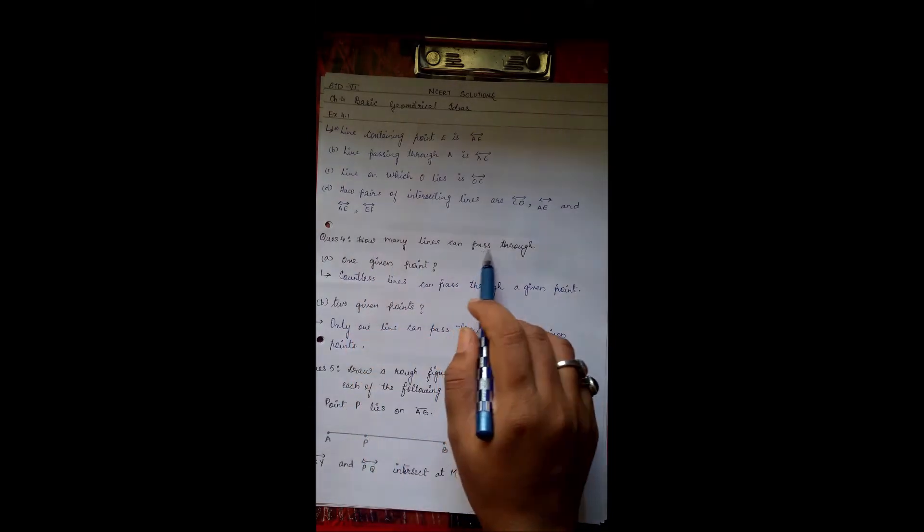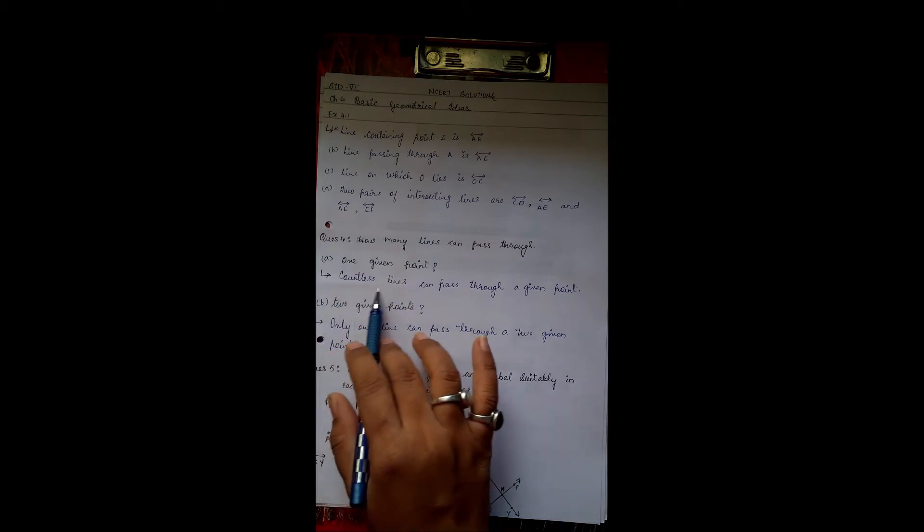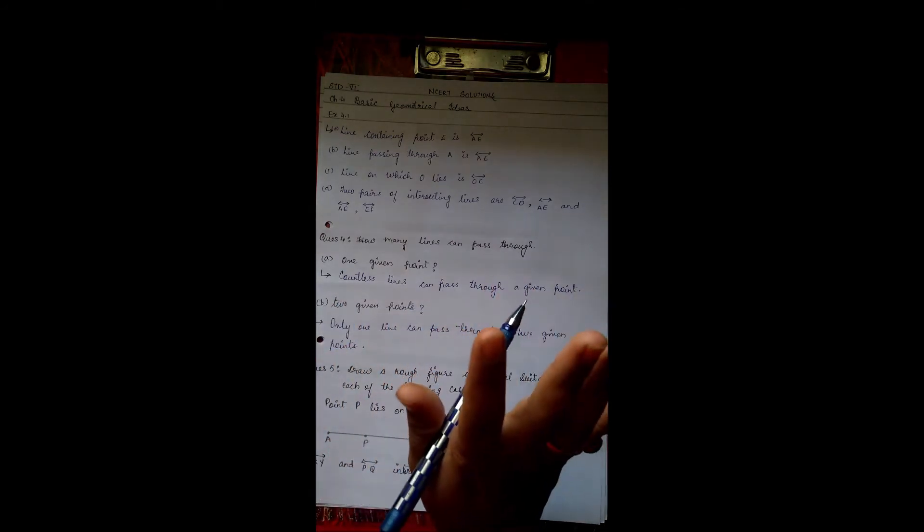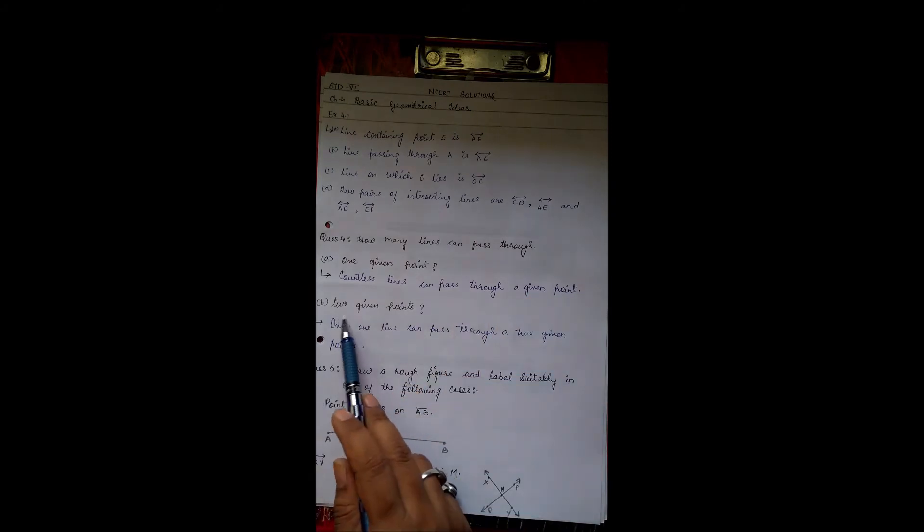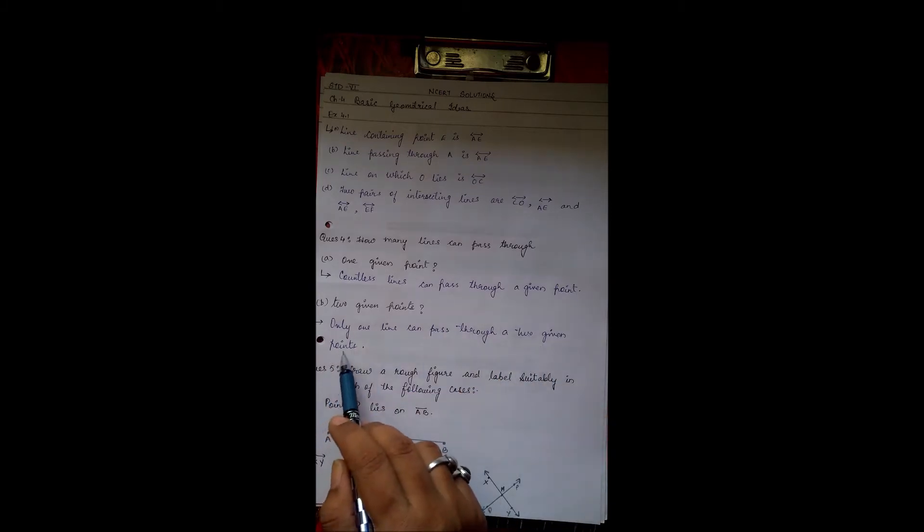Fourth question: how many lines can pass through one given point? Okay, so from one given point, there are countless lines that can pass through a given point. Two given points, only one line can pass through two given points.